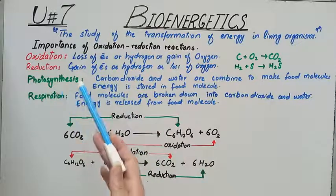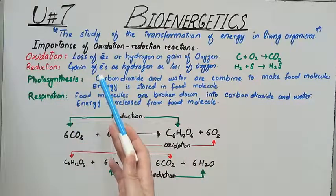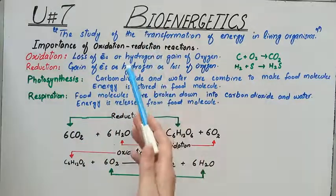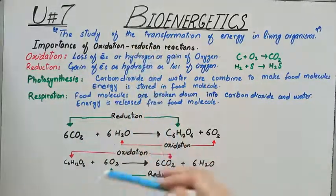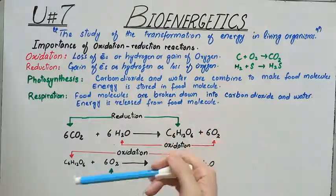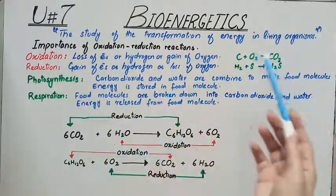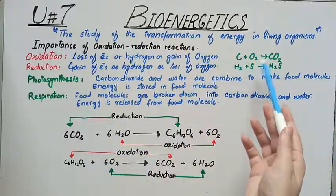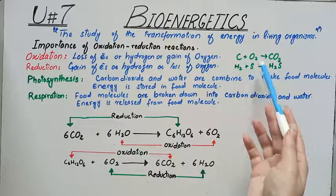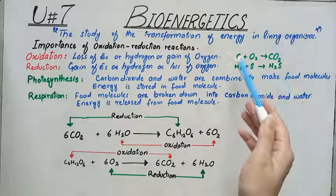Oxidation is the loss of electrons, or the removal of hydrogen from an atom, or the gain of oxygen. For example, in the equation shown, carbon reacts with oxygen to form carbon dioxide — meaning the carbon has gained oxygen.